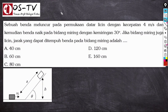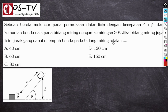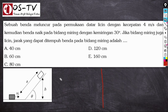Contoh soal berikutnya: sebuah benda meluncur pada permukaan datar licin dengan kecepatan 4 meter per sekon, kemudian naik pada bidang miring dengan kemiringan 30 derajat. Jika bidang miring juga licin, jarak yang dapat ditempuh benda pada bidang miring adalah? Persoalan ini pernah dibahas pada video Part 1 dengan cara bertahap. Sekarang kita selesaikan dengan rumus cepat. Yang ditanyakan di dalam soal adalah S, sementara rumus cepat berbicara tentang H.